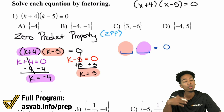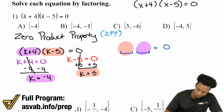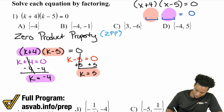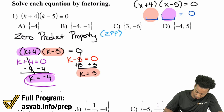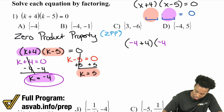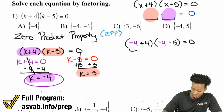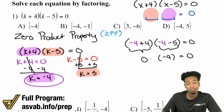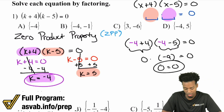Now I'm going to go ahead and prove the point. If I were to plug in negative four, let's plug that in. K is negative four, so we have negative four plus four times negative four minus five. If I plug in negative four for everything that's k, negative four plus four is going to be zero. And then negative four minus five, that's going to be negative nine. What is zero times negative nine? Zero. Just zero. So this absolutely works.